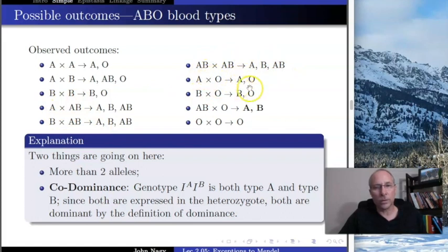What about this? A cross O, you get A or O. B cross O, you get B or O. Here's a key, the last AB mating: AB cross O. You can either get A or B, and that's it. There's the key. If you can see what's going on here, you can see exactly what's happening. And O cross O only gives O.